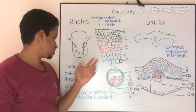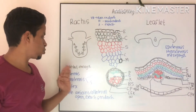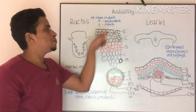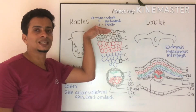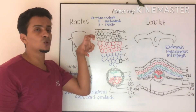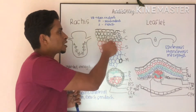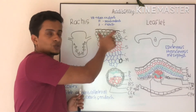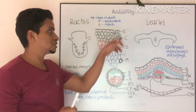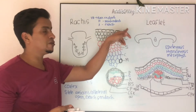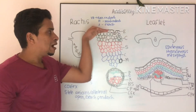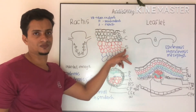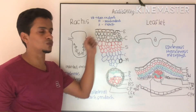Just below the epidermis is the hypodermis — 'hypo' means below. This hypodermis is divided into two major parts: the outermost layer, which is photosynthetic in nature and is known as the chlorenchymatous layer, and below this chlorenchymatous layer, a few-layered sclerenchyma is also present.